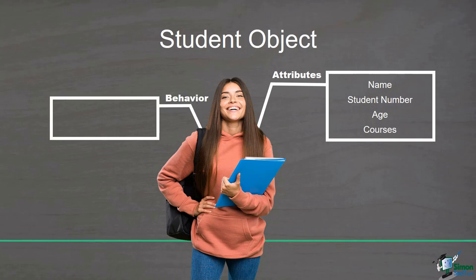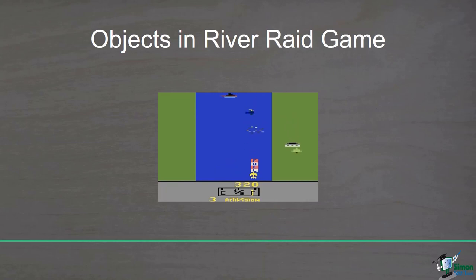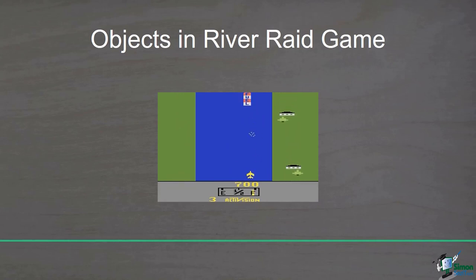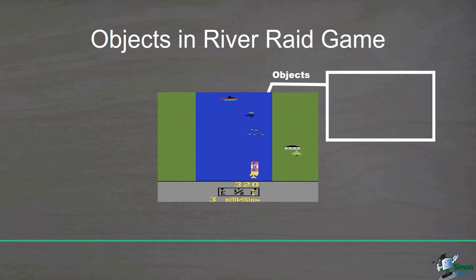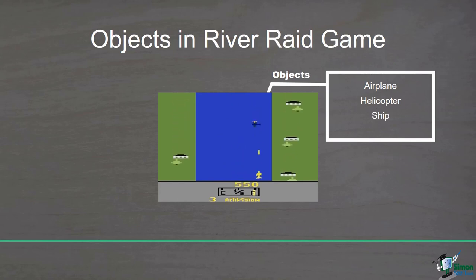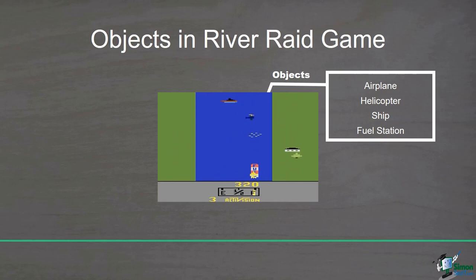How about behavior? A student can at least take a course or withdraw from a course. So a student has two behaviors or two methods. As another example, suppose you are thinking of designing a game like the River Raid Atari game. On this screen you can see lots of things: the airplane, the enemies such as helicopters or a ship, and the fuel station. All of these can be considered as objects that have attributes and methods.